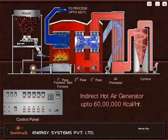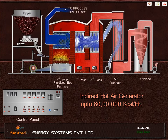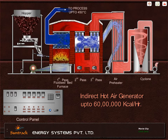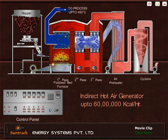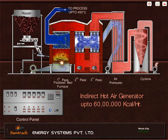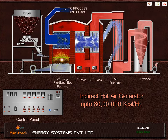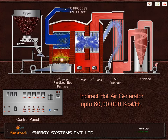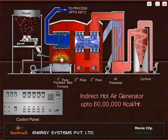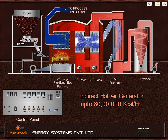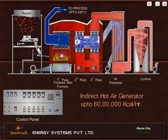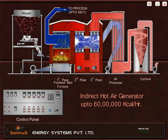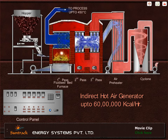Force-draught fan, or FD fan, installed in the system gives fluidization and combustion air to the fuel through specifically designed nozzles. The furnace has bed material which in most cases is river sand. Bed material remains under continuous fluidization and bed temperature maintained is about 800 degrees Celsius. Fuel falls on this hot bed and burns fully and instantly.